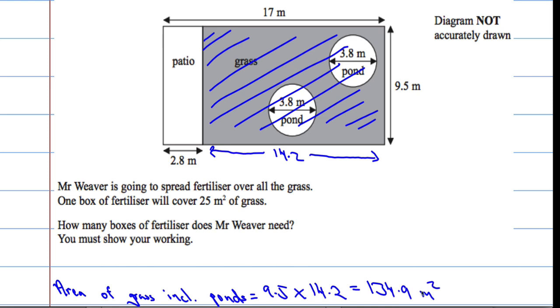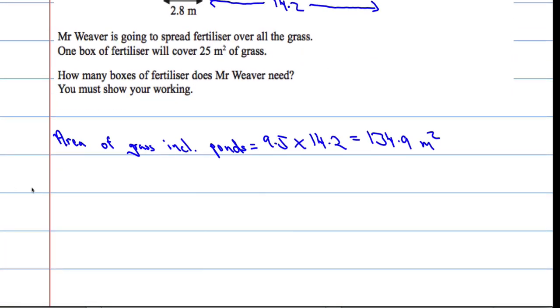Okay, next thing I'd like to do is work out the area of one of these ponds. So let's work out the area of a pond. And then we'll double it. That will give us the area of two ponds. So the area of a pond. The pond is a circle. And the area of a circle is pi times r squared.